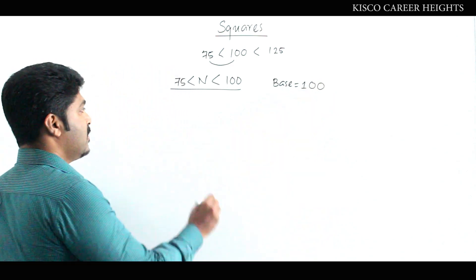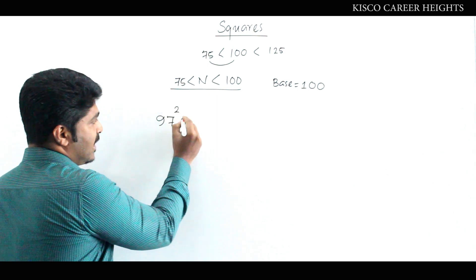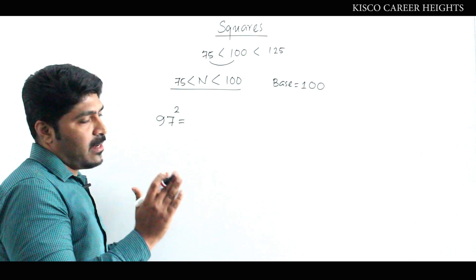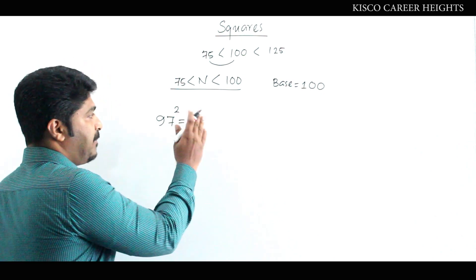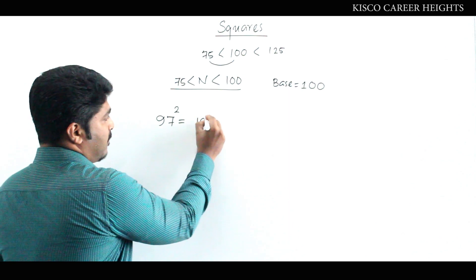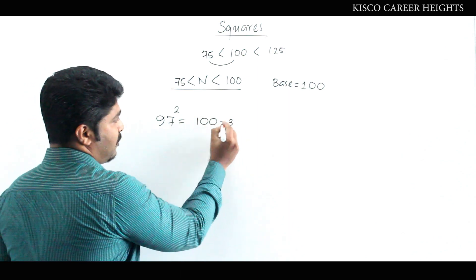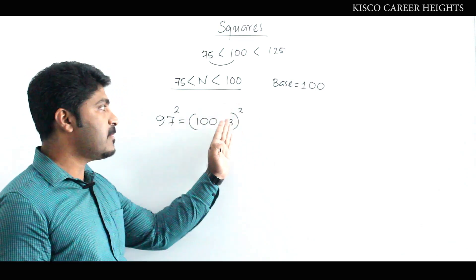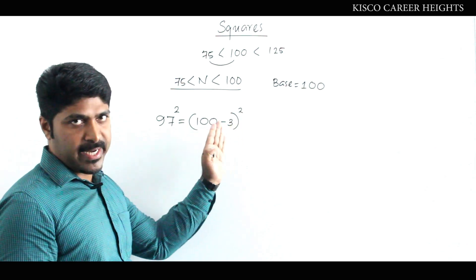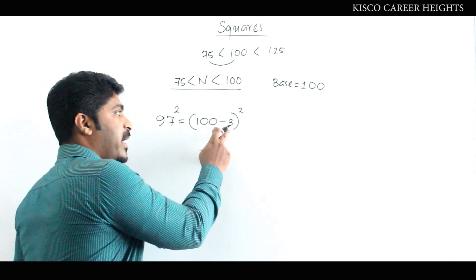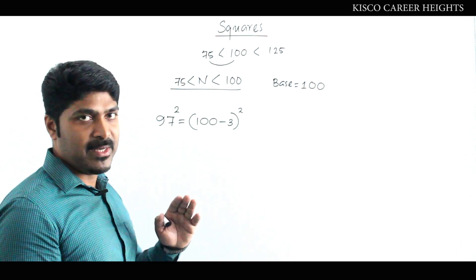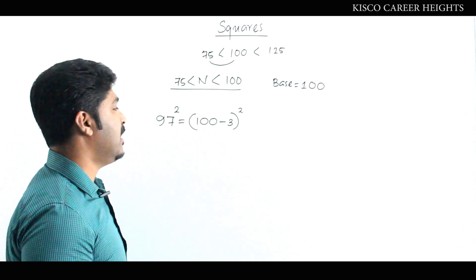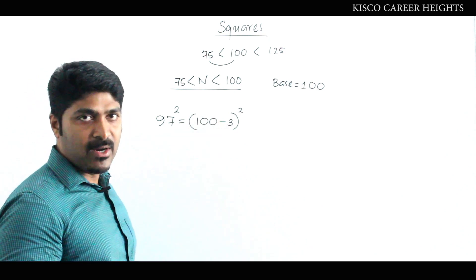Consider an example. If you need to find out 97 squared, we apply the identity (A − B)². We can split this value in the form (100 − 3)². Here, 97 is 3 less than 100, so this 3 is called the negative complementary.